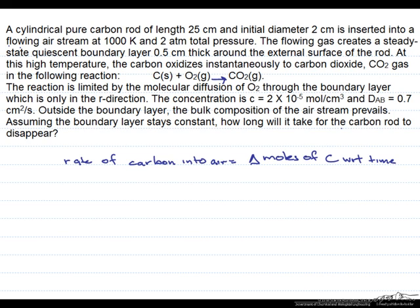So we found what the initial rate of oxygen diffusion into the boundary layer was. And that equaled negative 2πLc·D_AB times this mole fraction of oxygen 0.21 divided by ln of r2 over r1.